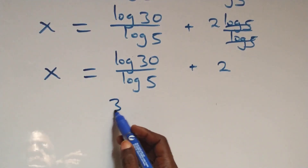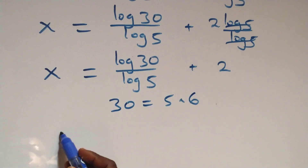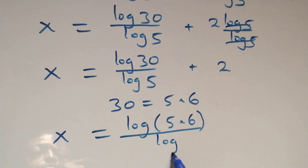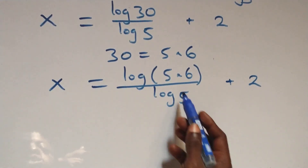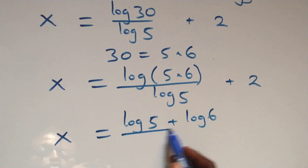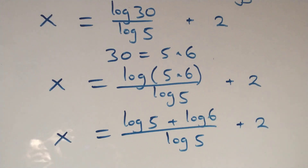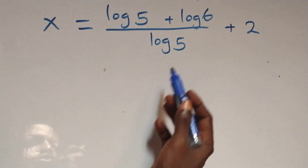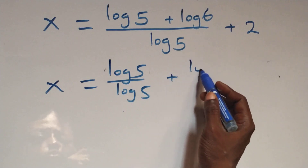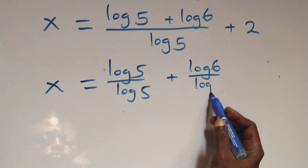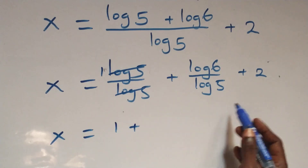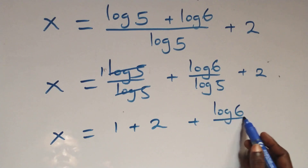The next step here, 30 can be expressed as 5 times 6, which implies what we have becomes x equals to log of 5 times 6 over log 5 plus 2. We separate this into two fractions: x equals to log 5 over log 5 plus log 6 over log 5 plus 2. Here log 5 cancels each other where we have 1 left, which implies x equals to 1 plus 2 plus log 6 over log 5.